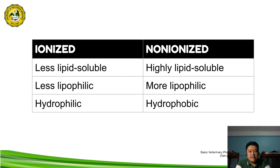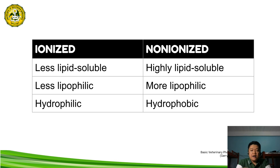We have the ionized and the non-ionized form. Comparing the two: the ionized form of the drug is less lipid-soluble, while the non-ionized form of the drug is highly lipid-soluble. Because it is highly lipid-soluble, the non-ionized form can readily cross the plasma membrane or cellular membrane. The ionized form of the drug is also less lipophilic.